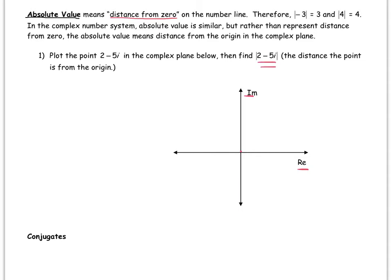So let's plot 2 minus 5i. There's 2, and minus 5i would be here, so 2 minus 5i is right here. And so the distance from 0 would just be this little distance right here.